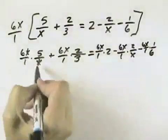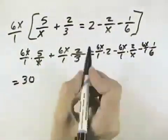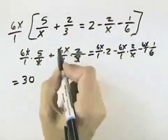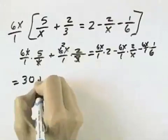Here the x's cancel, leaving 6 times 5, which is 30. Here the 3 cancels, leaving a 2x times 2, which is 4x.